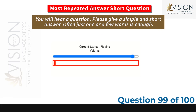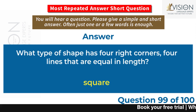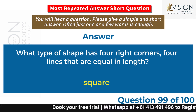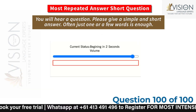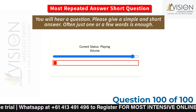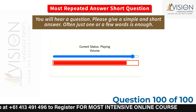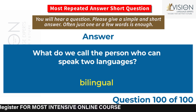What type of shape has four right corners and four lines that are equal in length? Square. What do we call the person who can speak two languages? Bilingual.